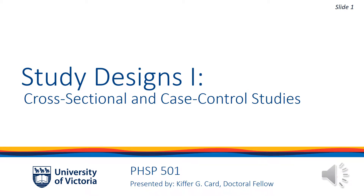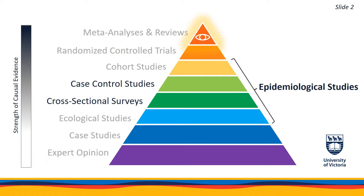Hi there, this is Kiffer with week 5's lecture. So far in the course, Nate has introduced epidemiology and described the impact of error and confounding in descriptive studies. On slide 2, you can see that we classify studies based on a number of study designs, and that some of these designs are relatively more powerful than others in shaping scientific belief. Over the next four weeks, we're going to apply what we've learned earlier in the course and consider how to critically assess the strengths and limitations of analytic research.